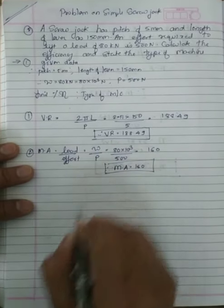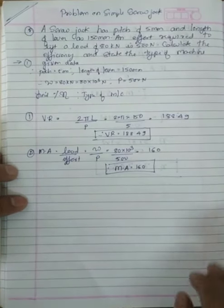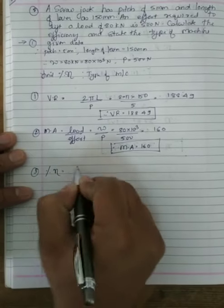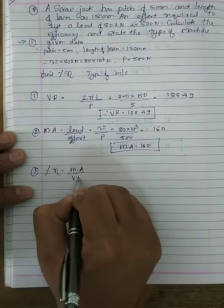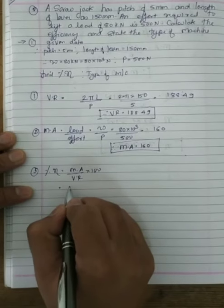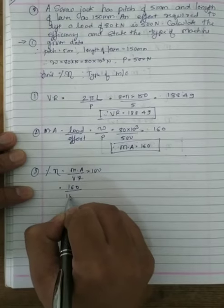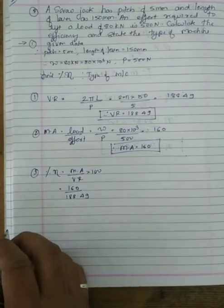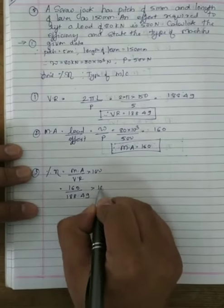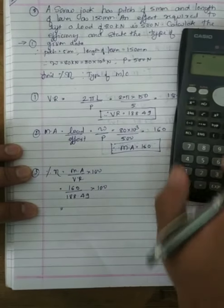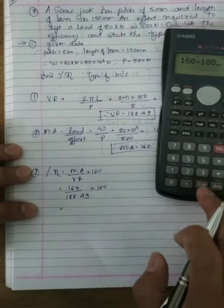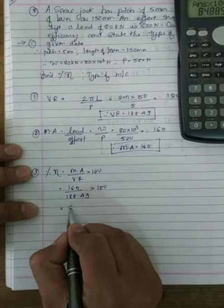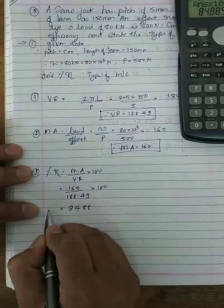So mechanical advantage MA is equal to 160. So we have velocity ratio and mechanical advantage. Now efficiency is equal to mechanical advantage upon velocity ratio into 100.